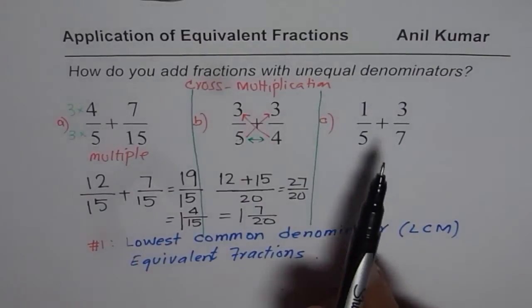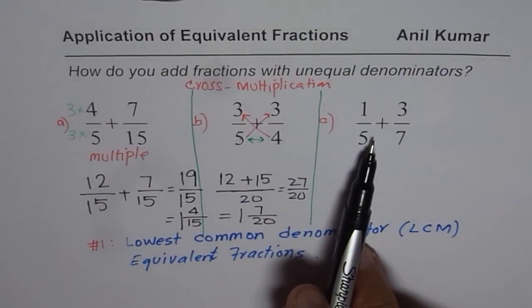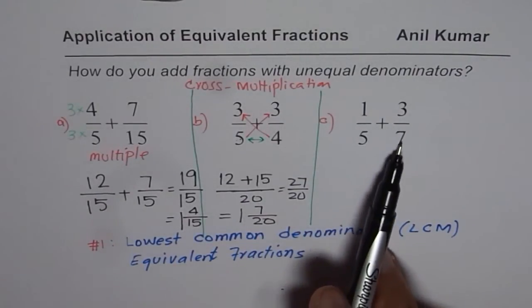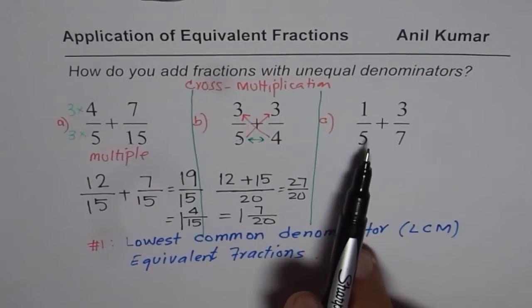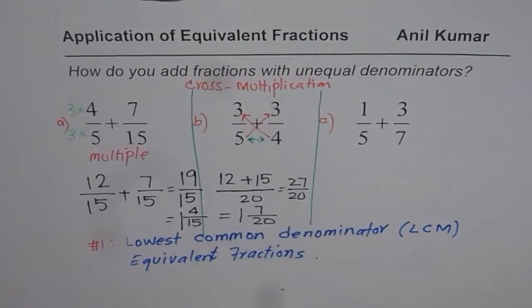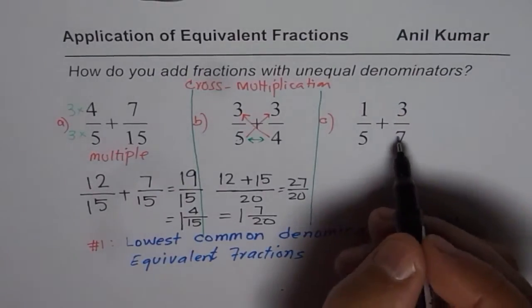Now here, this is for you to do. Best strategy is both are prime numbers. Here, best strategy is indeed cross multiplication. So cross multiply, get your result.